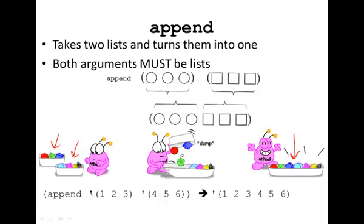Here's an example where I'm taking the same two lists, the list one, two, three, and the list four, five, six, and what I get left over is a single list with six elements.